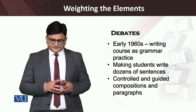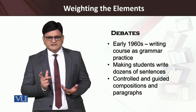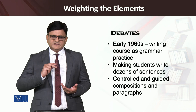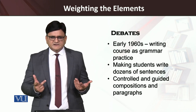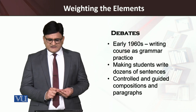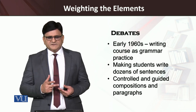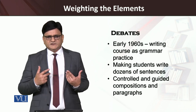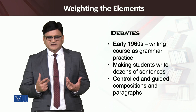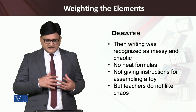The early 1960s saw a conventional way of teaching writing, where grammar was seen as a discrete, decontextualized element that was practiced. Students didn't have any context — they used to write for the sake of writing, writing dozens of sentences in a controlled and guided manner. Apart from sentences, students were asked to write paragraphs in a sheltered environment where the teacher would provide shelter, which might not encourage students to think outside the box.